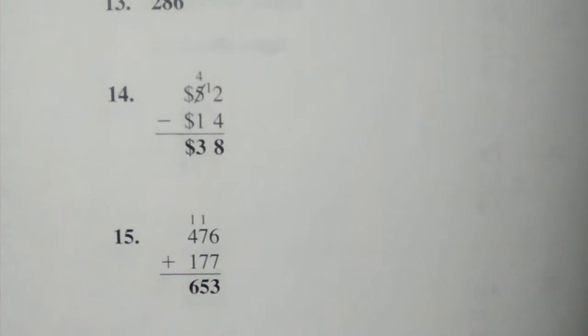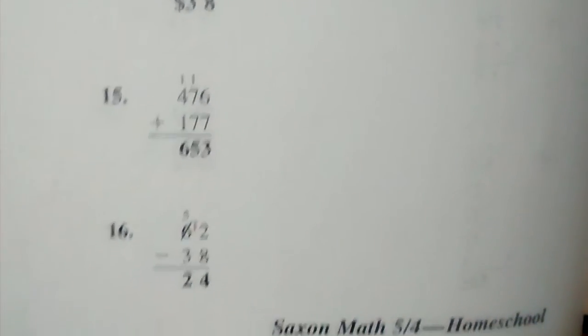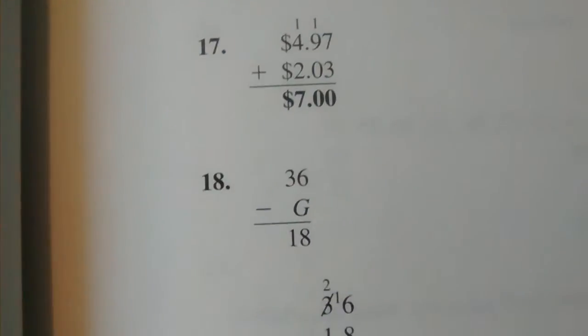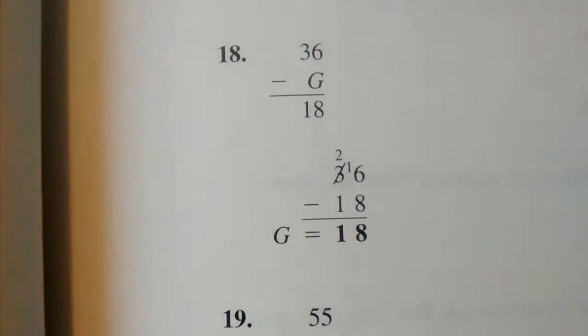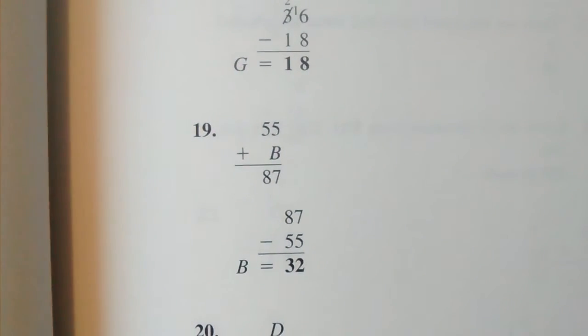15: 653. 16: 24. 17: $7. 18: G equals 18. 19: B equals 32.